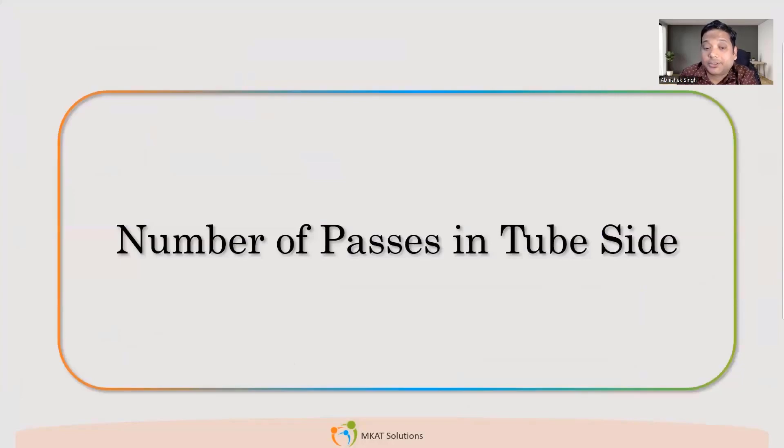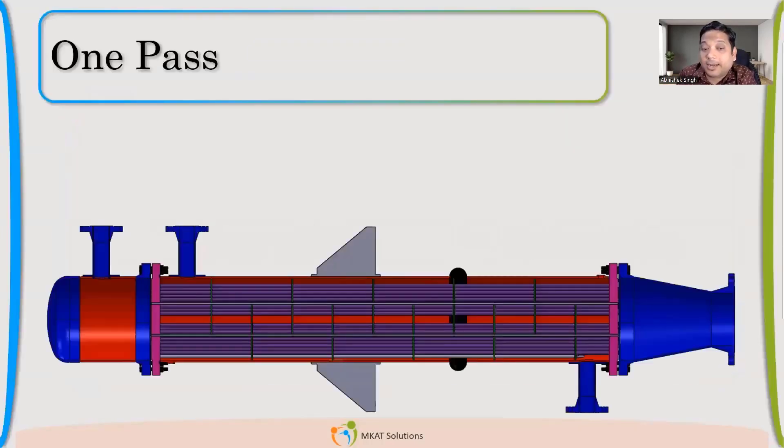Now the next part, which is number of passes. Many times we get confused with number of passes. So one pass, it's very simple. The flow will come from one side and flow like this. So this is called one pass. We are talking about passes in tube side. When your fluid in tube side will pass only once in the shell, it is one pass.